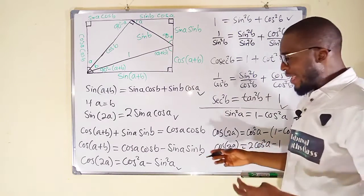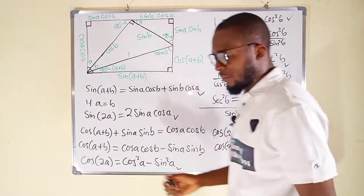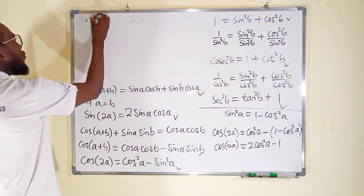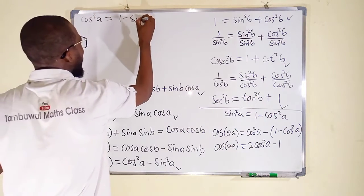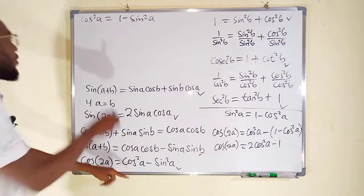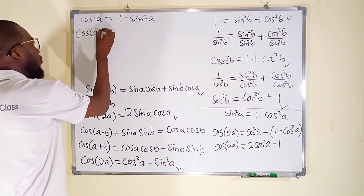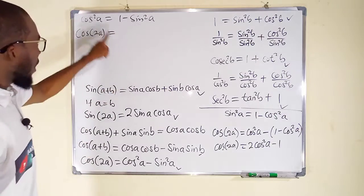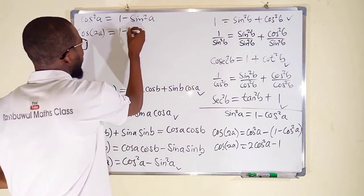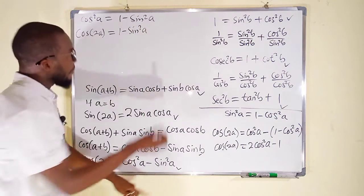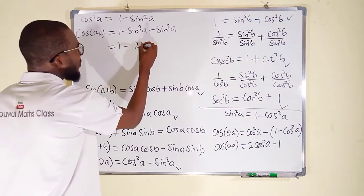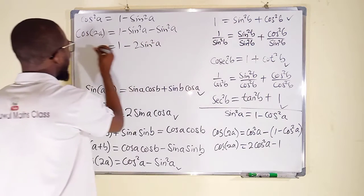Now let us make cos²A the subject to find yet another identity. We know cos²A = 1 − sin²A. Substituting into cos 2A = cos²A − sin²A, we replace cos²A with 1 − sin²A, giving cos 2A = (1 − sin²A) − sin²A = 1 − 2sin²A. This is another important identity.